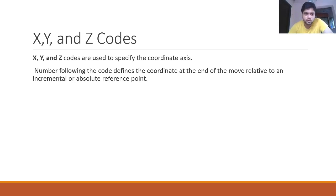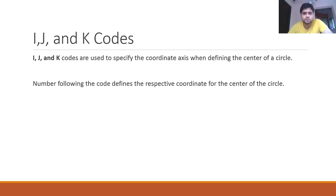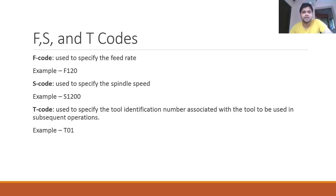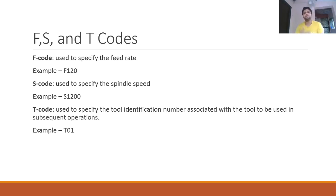XYZ codes specify the coordinate axis; the number following defines the coordinate at the end of the move, relative to incremental or absolute reference. IJK codes specify coordinates when defining the center of a circle — used in G02/G03 arc programming. F code is feed rate (e.g., F120); S code is spindle speed (e.g., S1200); T code is the tool number (T01, T02, T03, etc.).